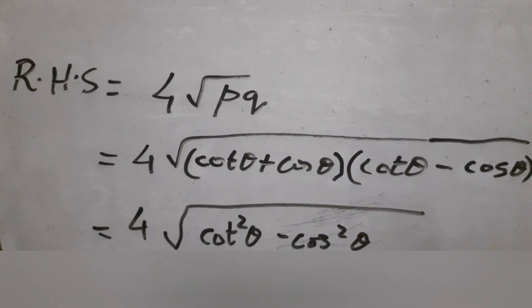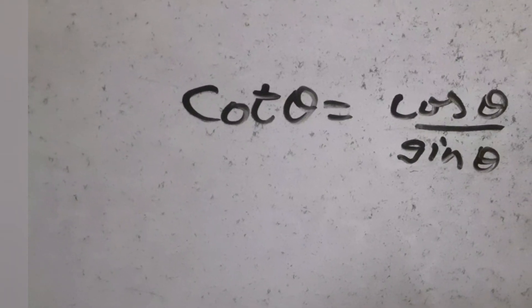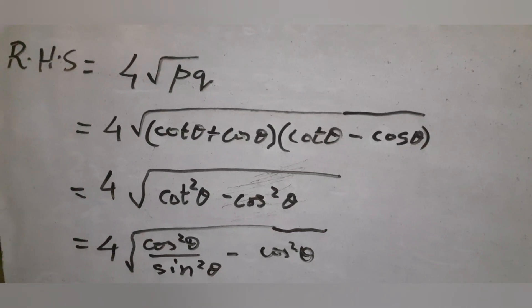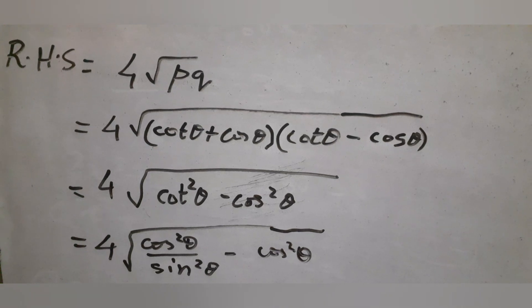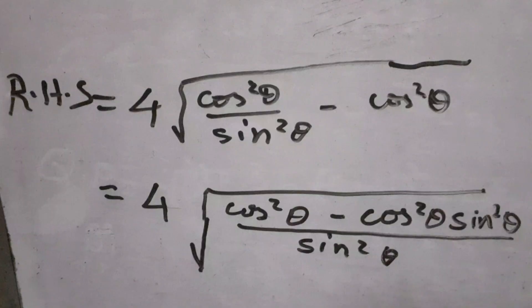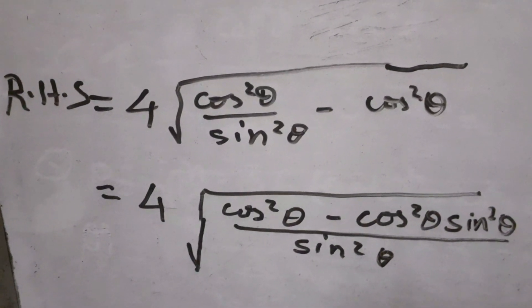Use the trigonometric ratio cot θ = cos θ / sin θ. After subtracting the fractions, we take cos θ common in the numerator.